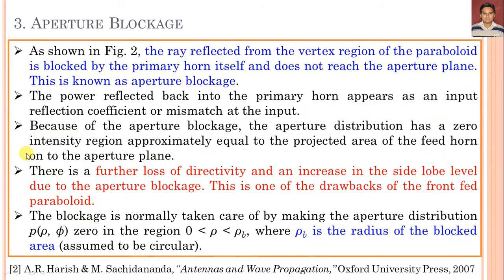Due to aperture blockage, the aperture distribution has a zero-intensity region approximately equal to the projected area of the feed horn on the aperture plane. This is the prime drawback of the prime focus paraboloid reflector: aperture blockage reduces directivity and increases the side lobe level. The blockage is normally addressed by careful aperture distribution design to achieve maximum directivity and minimum side lobe level.